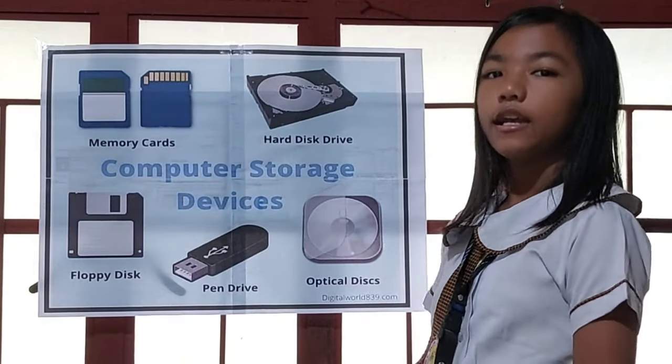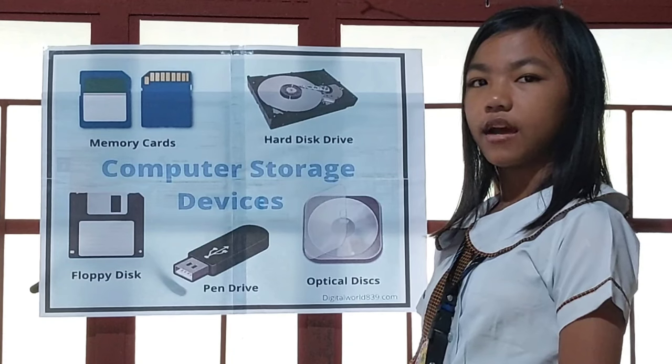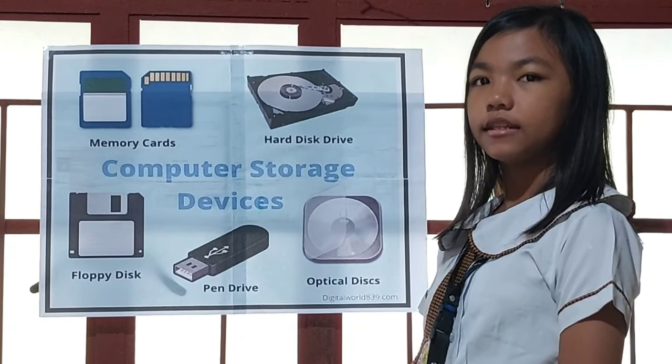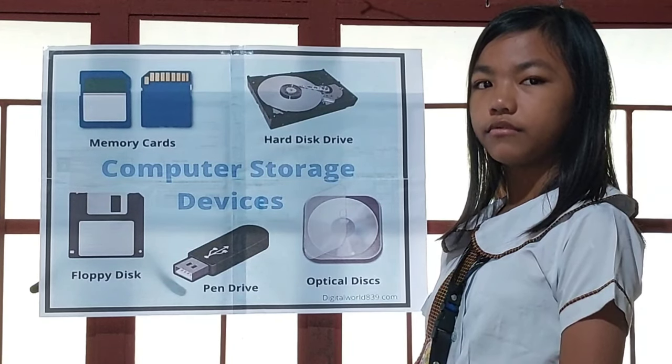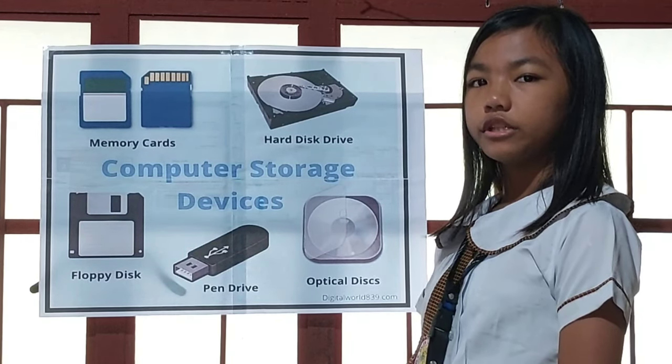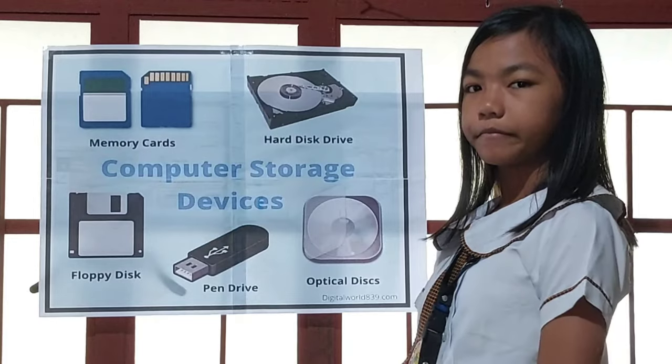Number 3: Floppy disk. It is also known as a floppy diskette. It is a removable storage device which is in the shape of a square.